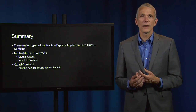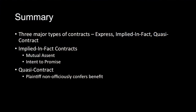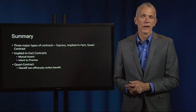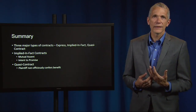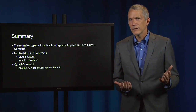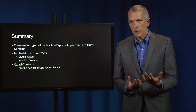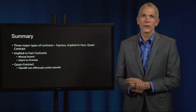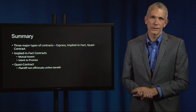Today we have examined a case that introduced us to the difference between three major types of contracts: explicit contracts, formed by express agreement; implied-in-fact contracts, formed by inference of the party's conduct; and quasi-contracts, where there is no mutual assent and exchange of promises, but a benefit is conferred by one party on another, and the receiving party is liable as a matter of law to pay for that benefit. We've also learned that implied-in-fact contracts require mutual agreement and intent to promise, while quasi-contracts do not require mutual agreement—instead, there must be a benefit non-officiously conferred on another party, and that party must appreciate the benefit and retain it.